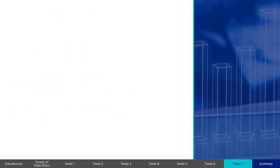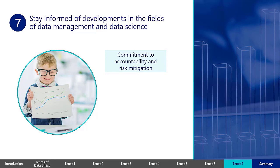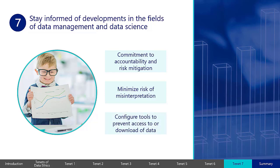The seventh and final tenet of data ethics is to stay informed of developments in the fields of data management and data science. Advanced technologies can provide great benefits to the public sector, but should be deployed with a commitment to accountability and risk mitigation. Organizations are increasingly using interactive visualization tools to present data and tell their data stories, and visualizations of the data should be designed to minimize the risk of misinterpretation. It is also critical to make sure the data feeding these visualization tools is secure, and analytic tools should be configured so that unauthorized users will not be able to download sensitive, confidential, or protected data, either intentionally or by accident.